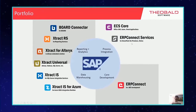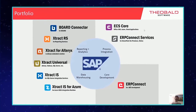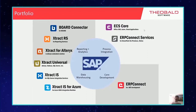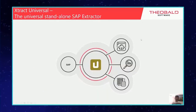On the right side you would find our products for process integration. For example, ERP Connect Services — our integration platform with SharePoint on-prem and Nintex on-prem. We have ECS Core, our integration platform for all cloud platforms and tools including Office 365, Nintex Workflow Cloud, K2, and many other tools. Today we would focus on Xtract Universal.